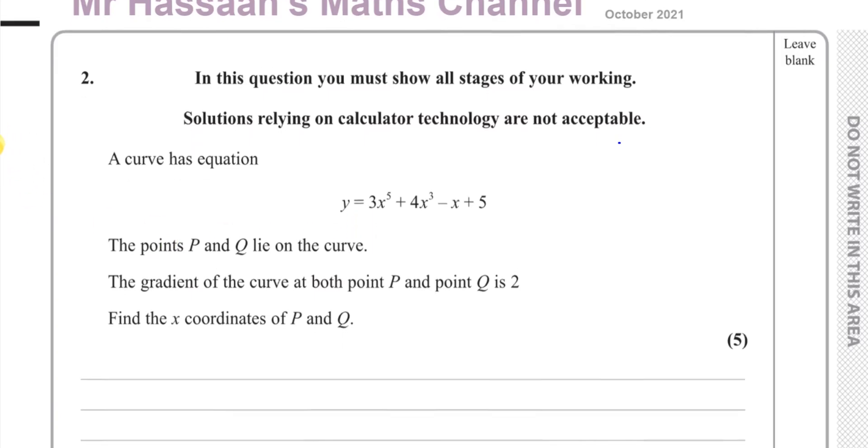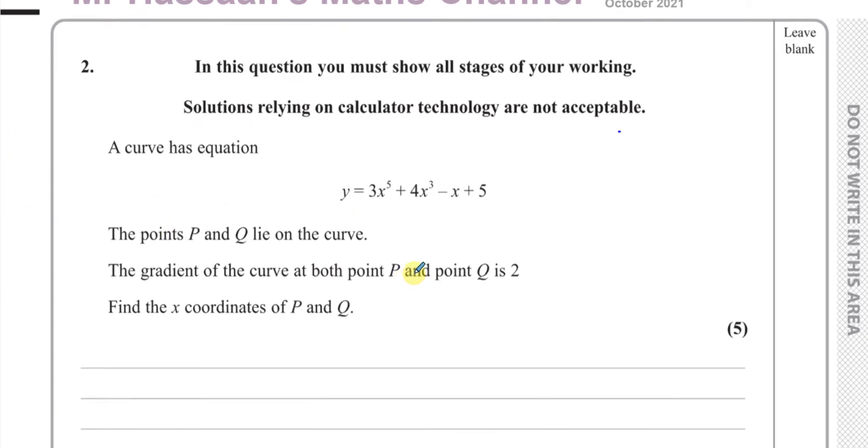So here they ask you to find the gradient of the curve, basically the gradient of this function. We've got to find dy/dx. It looks like everything is ready for differentiation, there are no modifications needed. All the variables, the x terms are to powers which are not in third form and they're all in the numerator so we can just go ahead and differentiate. Multiply by the power and subtract from the power: 5 times 3 is 15, x to the power of 4, 3 times 4 is 12, x to the power of 2, an x term just loses the x, so this is minus 1 and the constant terms become 0.